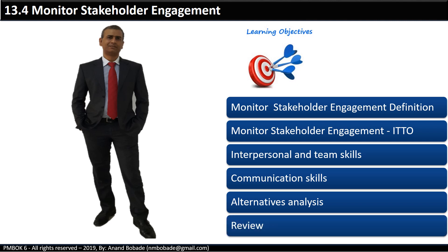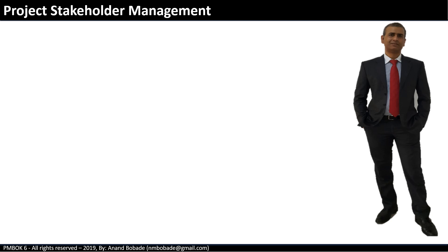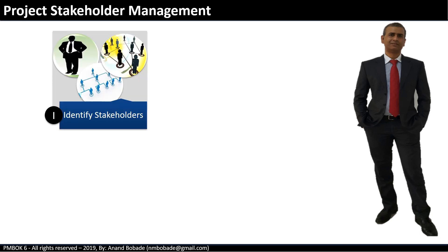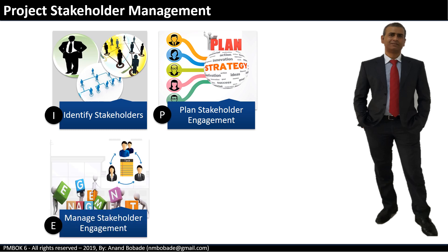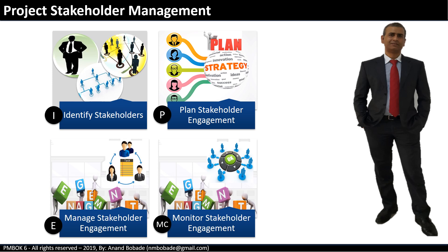Let's start with a quick look at the four processes under the Project Stakeholder Management knowledge area. The first process is Identify Stakeholders under the Initiating process group, where all stakeholders are identified. Next is Plan Stakeholder Engagement under the Planning process group, where we develop the stakeholder engagement plan. The previous process we learned was Manage Stakeholder Engagement under the Executing process group — this is action-oriented, where you talk to stakeholders and foster relationships. The last process is Monitor Stakeholder Engagement under the Monitoring and Controlling process group.